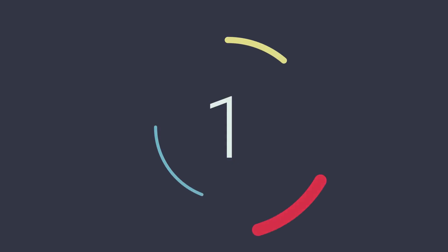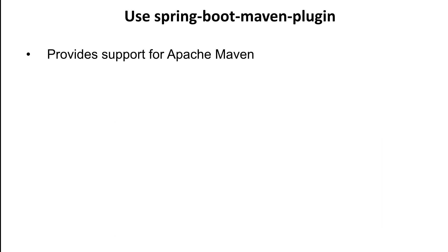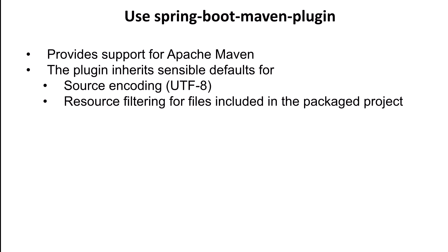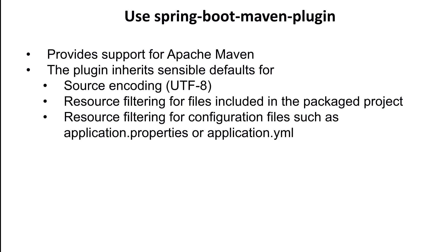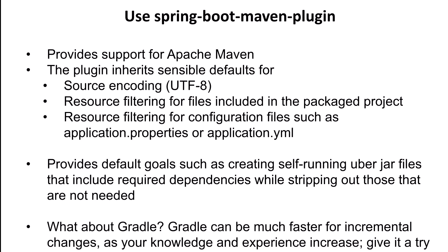Finally, the number one tip for getting started with Spring Boot is to use the Spring Boot Maven plugin. The Maven plugin provides support for Apache Maven and allows you to package your application as an executable jar or war, run Spring Boot applications, and generate build information prior to running integration tests. The plugin provides sensible default behavior and settings such as UTF character encoding and resource filtering, so you only package up what you need. The Spring Boot Maven plugin can be used to package your application as an executable jar, which can be run with the java -jar command, making it easy to deploy to other servers or environments. If you prefer Gradle, there's a Spring Boot Gradle plugin as well, and in many cases a Gradle build will run even faster than a Maven build.